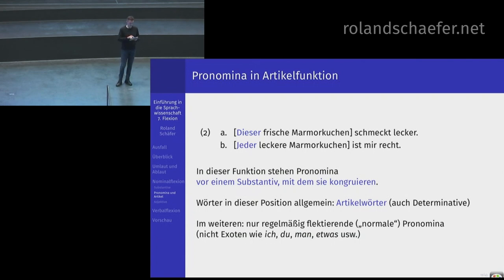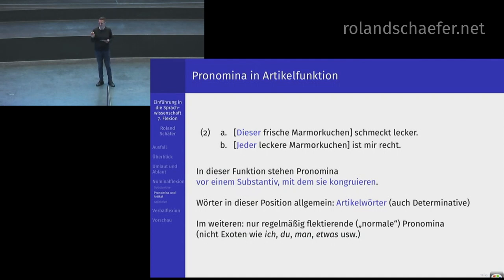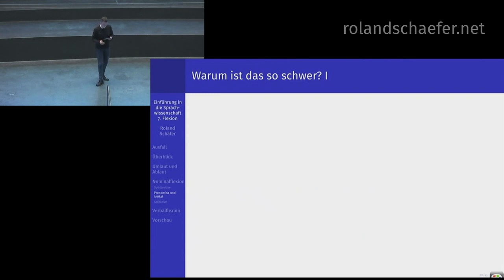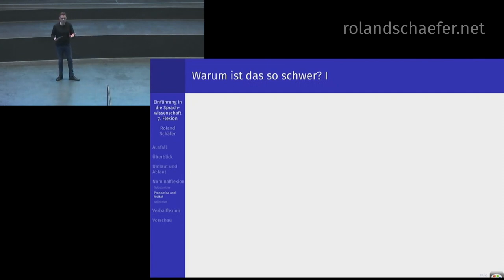Ich gucke mir nur die Pronomina an, für die es ein wirkliches System gibt – nicht solche Exoten wie ich, du, er, sie, es oder man oder etwas. Ich gucke mir nur solche an wie dieser oder jeder mit der systematischen Flexion. Da kommt jetzt der Unterschied zwischen Artikel und Pronomina ins Spiel. Wenn Sie sich die Formen des Wortes ein in Artikelfunktion und in pronominaler Funktion anschauen – einen Mantel im Akkusativ, einem Mantel im Dativ, eines Mantels im Genitiv – kennen Sie die Formen schon.